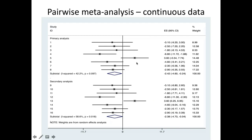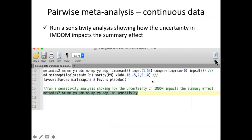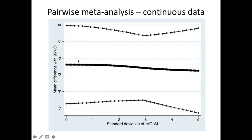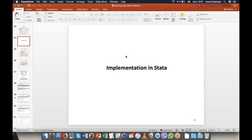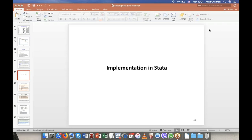The wider confidence interval in the available case analysis is because we gain precision by including the missing participants and heterogeneity drops. We can also run a sensitivity analysis showing summary mean differences and confidence intervals as the standard deviation of the IMP increases — reflecting greater uncertainty about the assumption. For updates on the command, you can visit the relevant website. We have now finished the talk and are ready to answer questions.